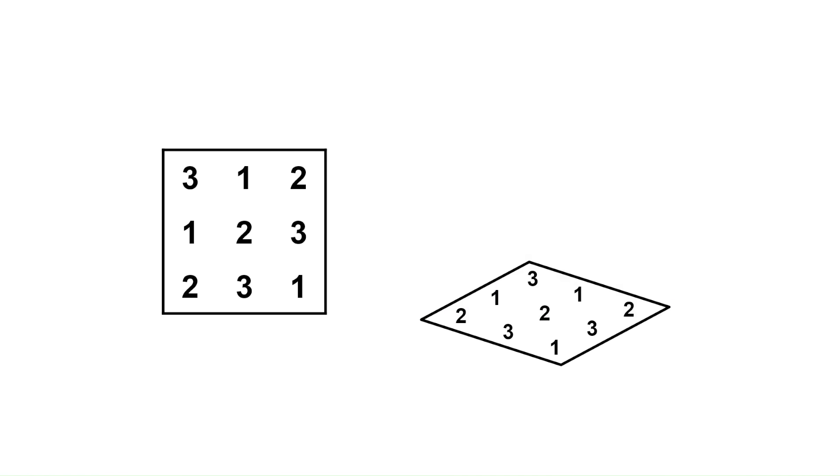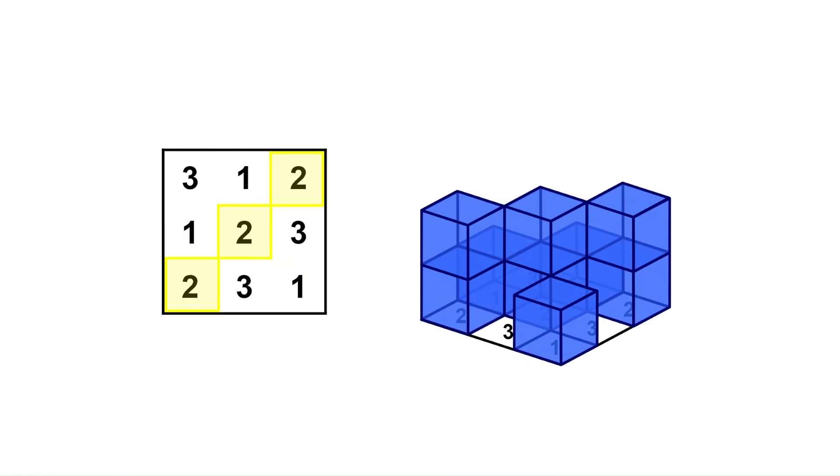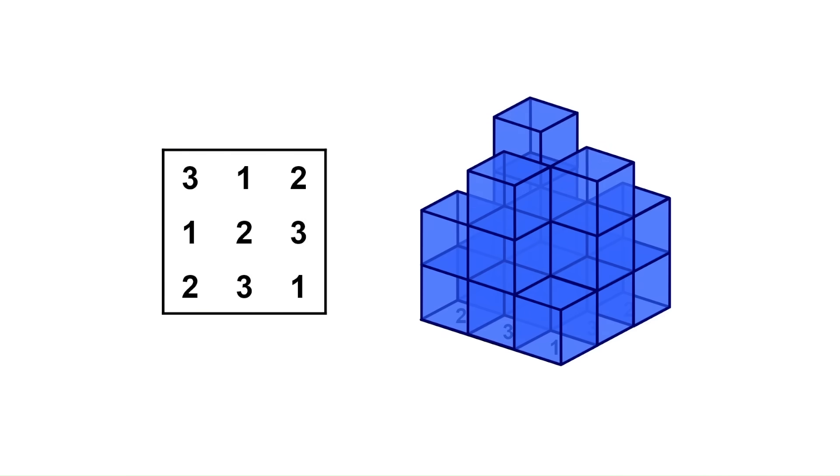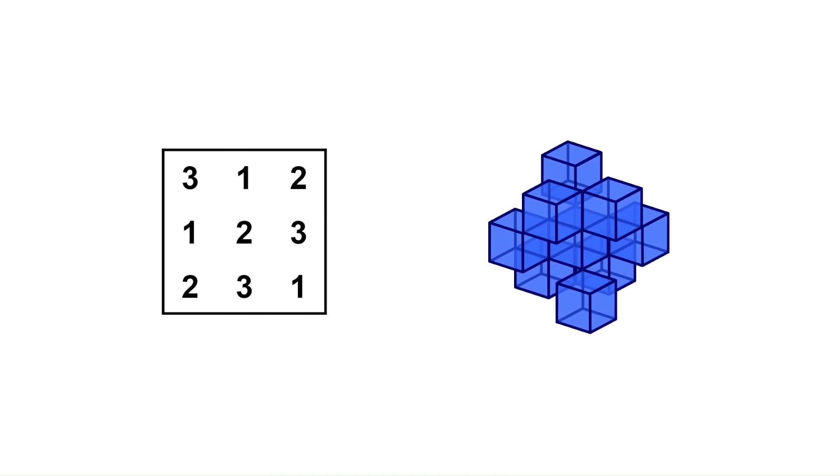So, start by laying down the Latin square, and then build a tower on top of each cell with the appropriate height. Now just keep the top of each stack, and you'll get an imaginary cube which is minimal.